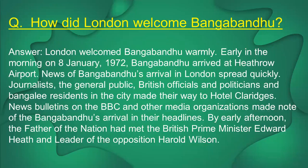Next question: How did London welcome Bangabandhu? London welcomed Bangabandhu warmly. Early in the morning on 8th January 1972, Bangabandhu arrived at Heathrow Airport. News of his arrival in London spread quickly. Journalists, the general public, British officials and politicians, and Bangladeshi residents in the city made their way to Hotel Claridge's. News bulletins on the BBC and other media organizations featured Bangabandhu's arrival in their headlines.